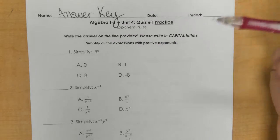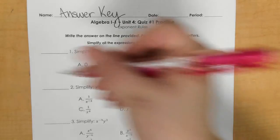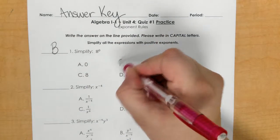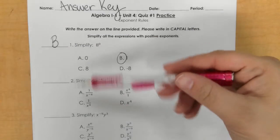For number 1, 8 to the 0 power. Anything to the 0 power is always 1, so that's B. I ask that you write your letters on the line in capital, please.